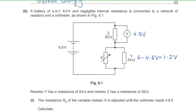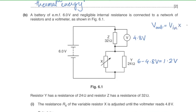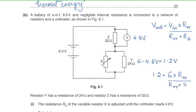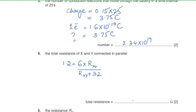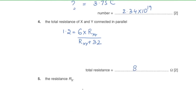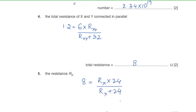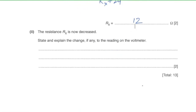Total resistance of X and Y in parallel: using the voltage divider formula, V_out / V_in = R_XY / (R_XY + 32). With V_out = 1.2 V and V_in = 6 V, the combined resistance of X and Y is 8 Ω. Then using the parallel resistance formula: R_X × 24 / (R_X + 24) = 8, giving R_X = 12 ohms.